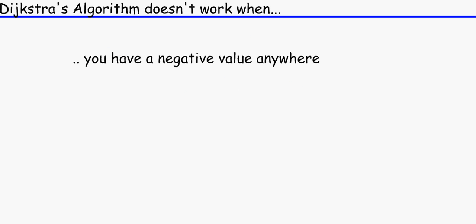Dijkstra's algorithm would not work if you got a negative value anywhere. So for example, if we've got a triangle here, and it was 8, 7 and minus 8. If we apply Dijkstra's algorithm here, it will say that the minimum weight would be 7. And that's not right because it's got a minus number here.